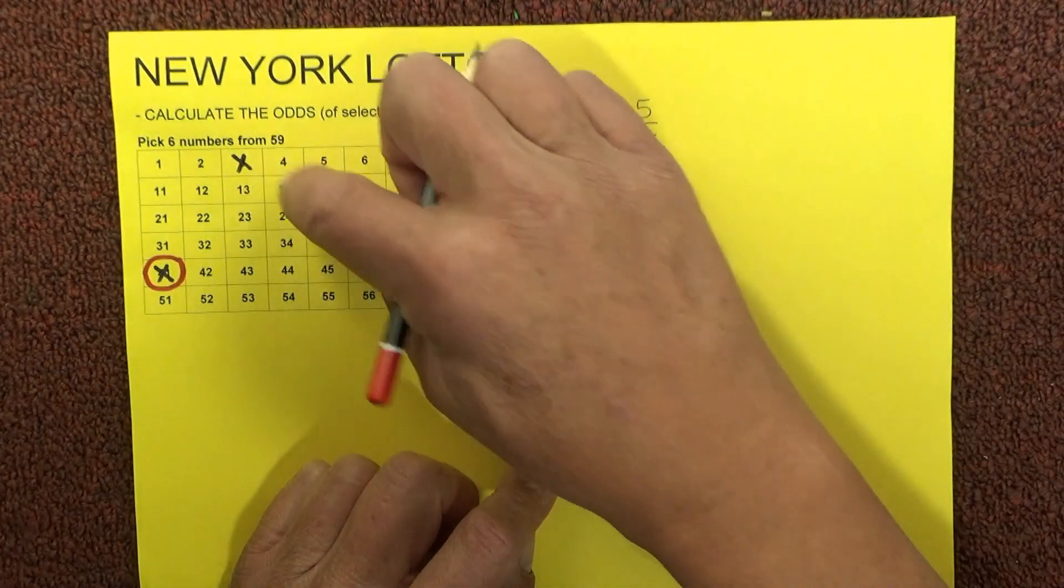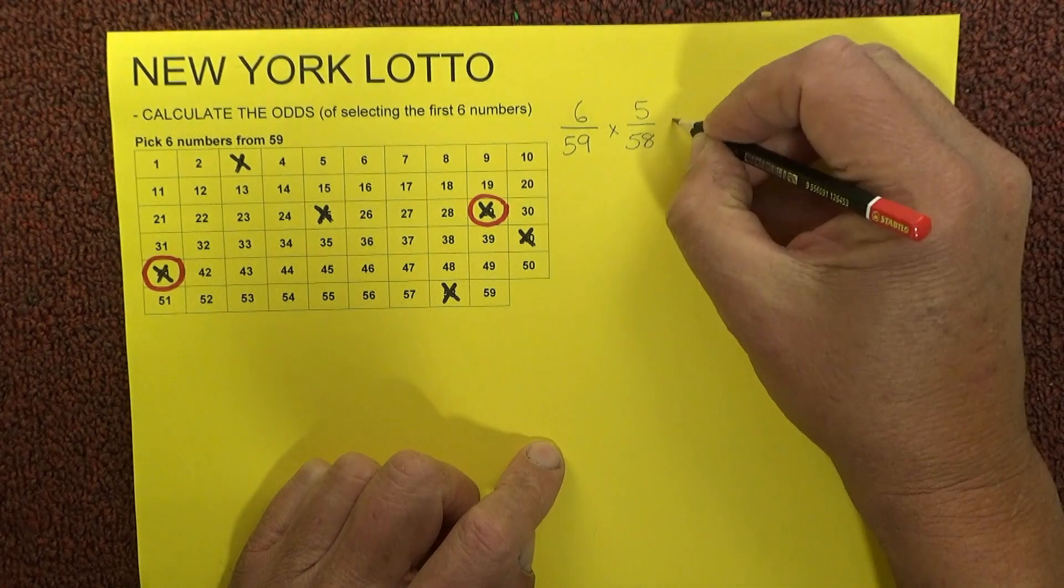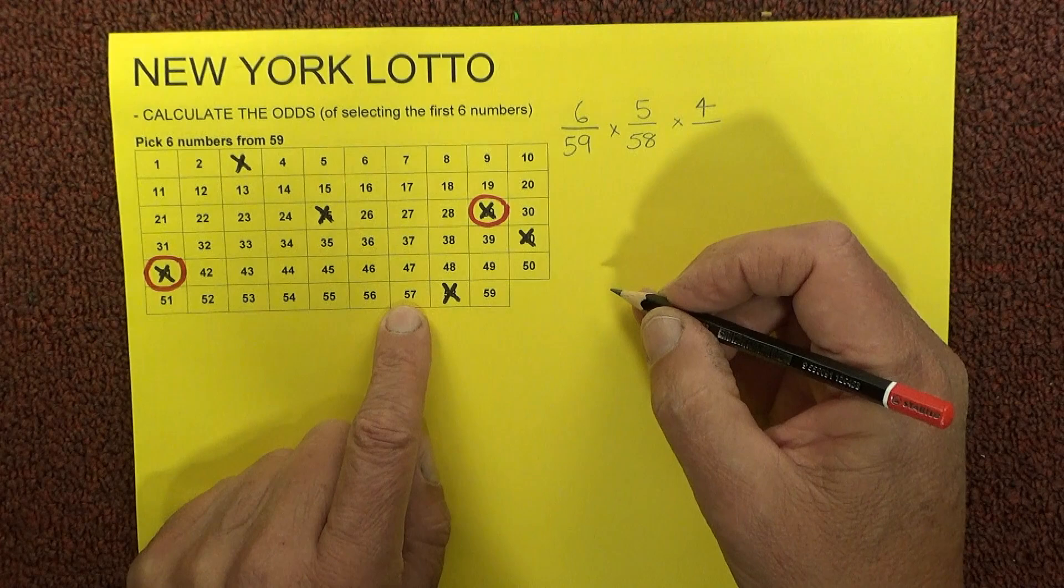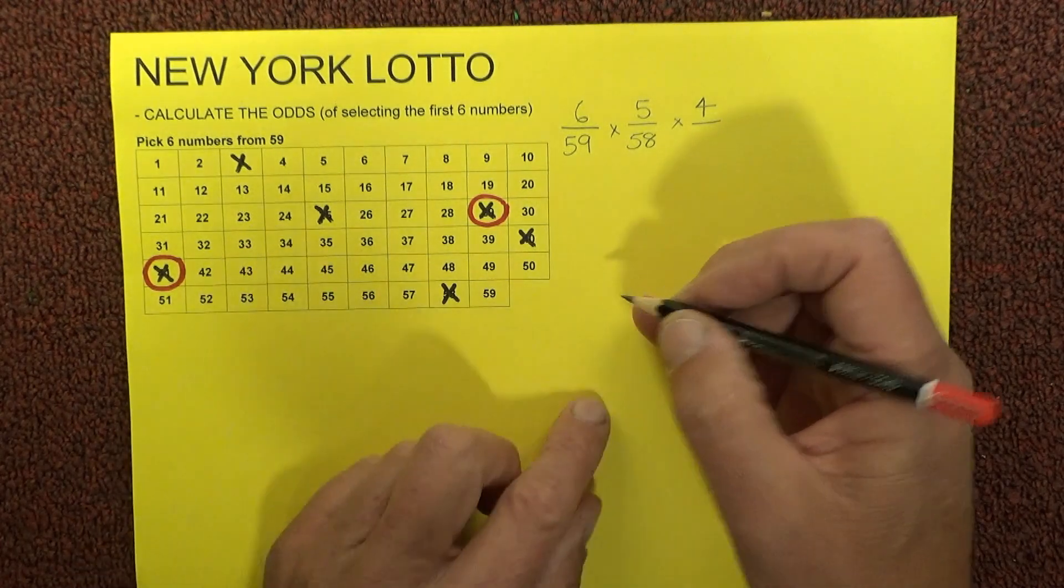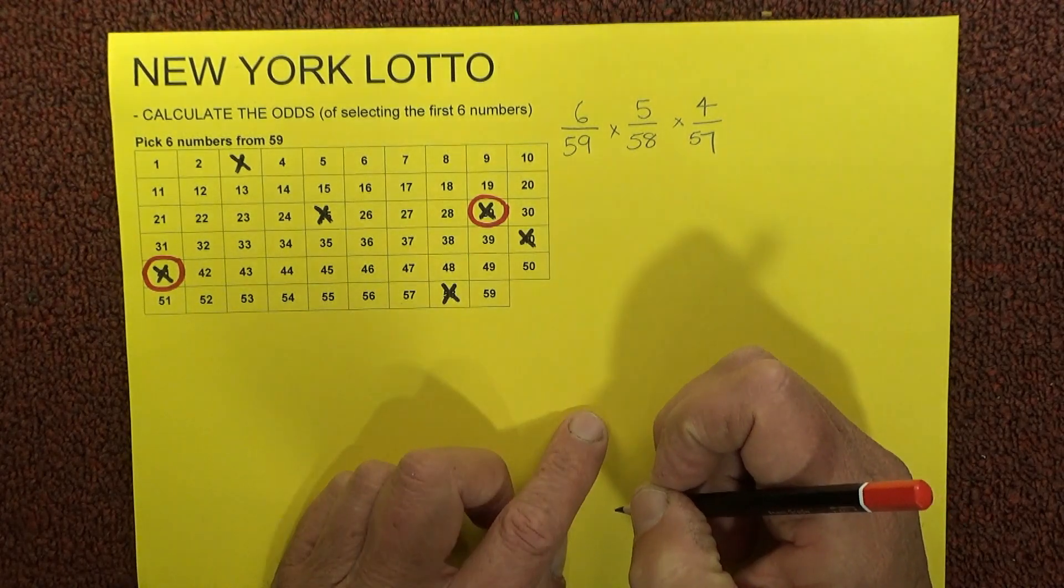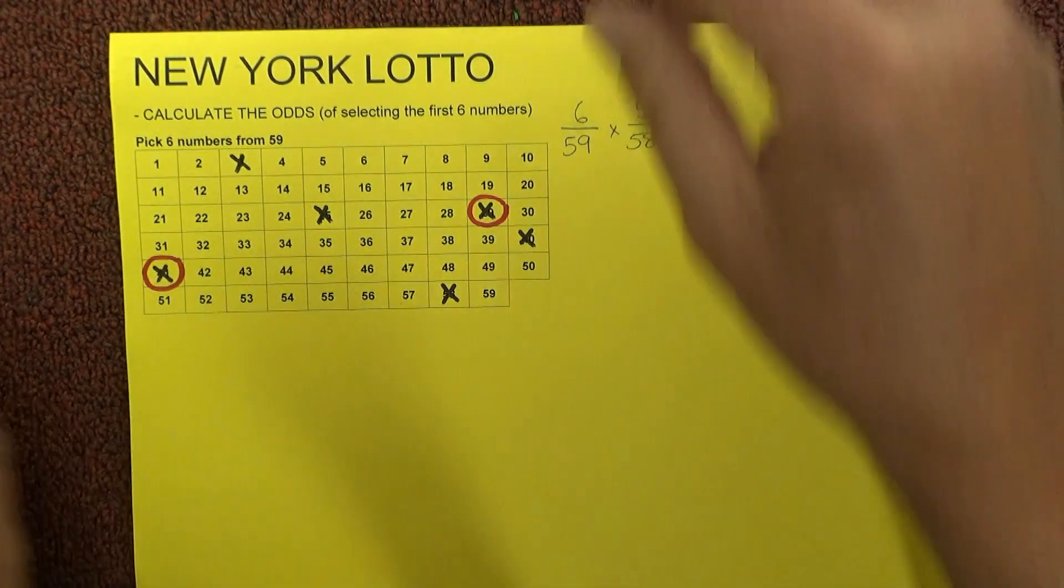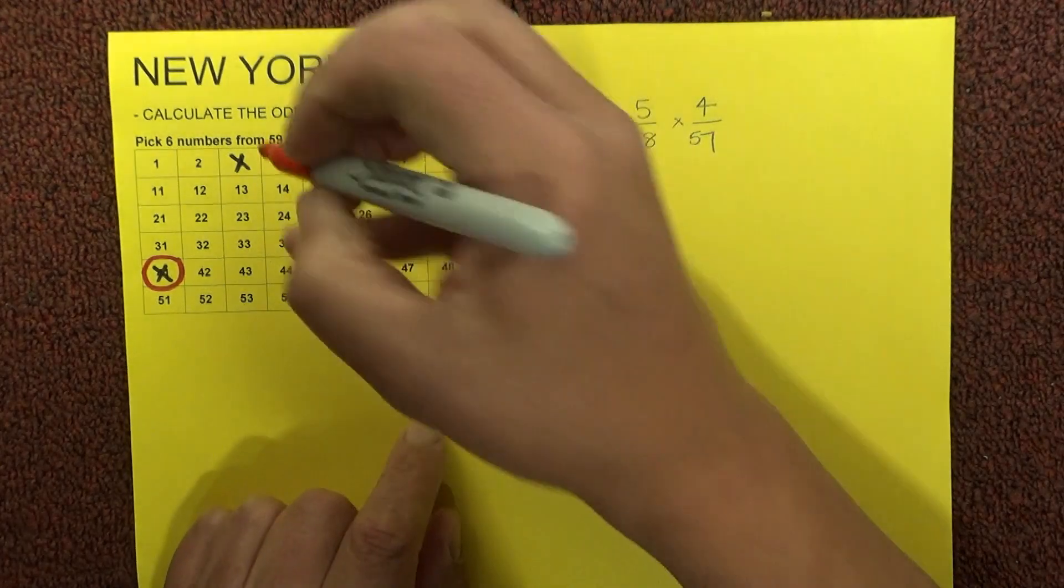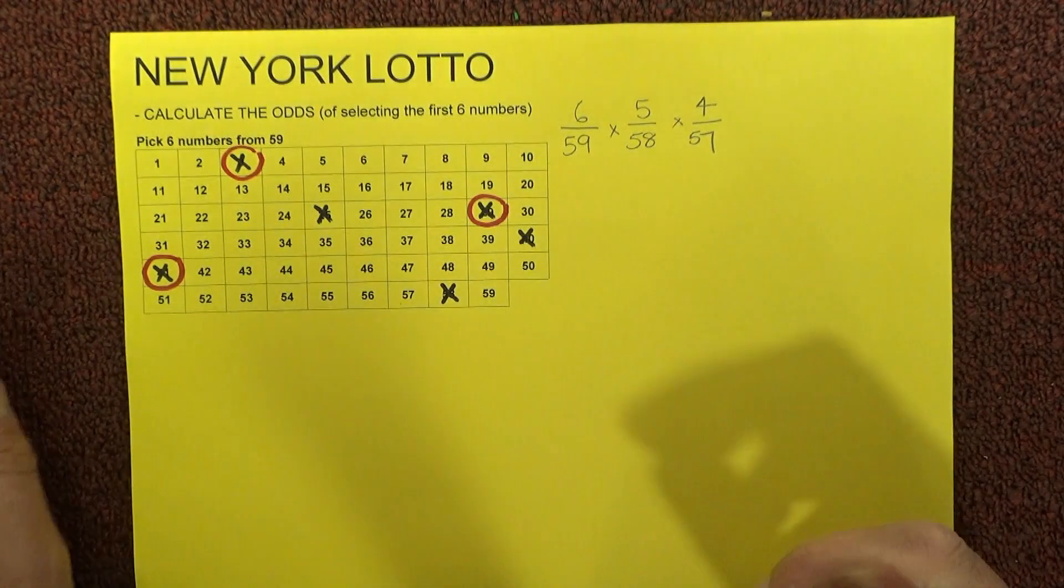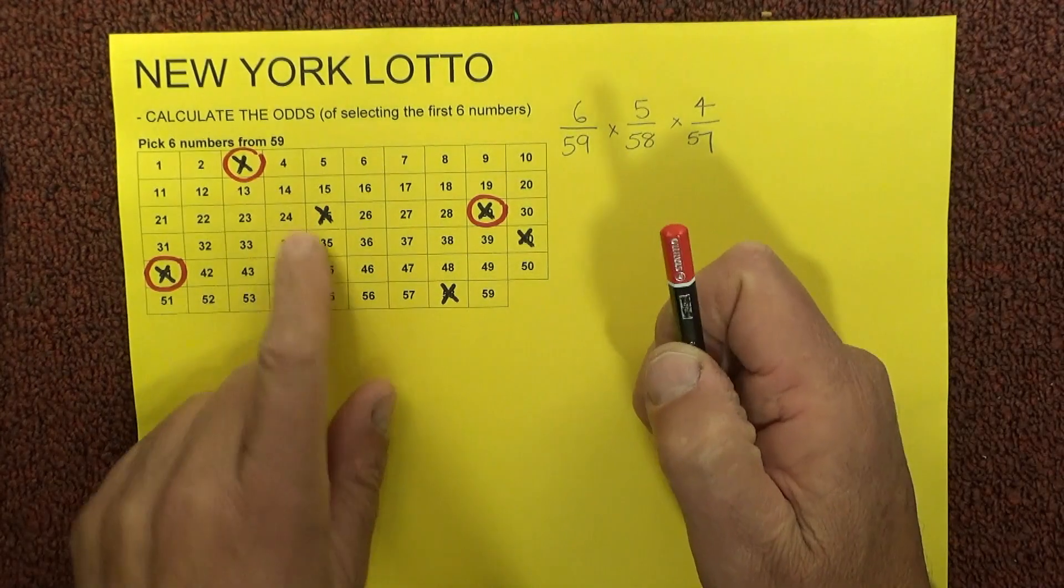Now when the third number's drawn, you've got 1, 2, 3, 4 - four unmatched numbers on your coupon. You've got 57 numbers left in the barrel because two have already been drawn, so you've got four chances in 57 of matching the third number that's drawn. I'll once again mark off one of those numbers to indicate that third number has also been matched.